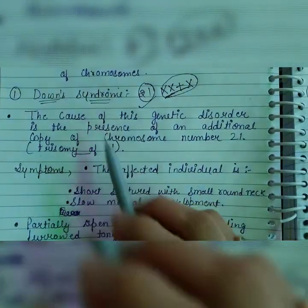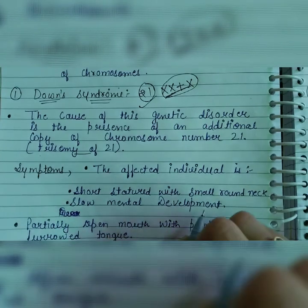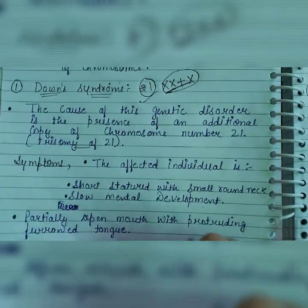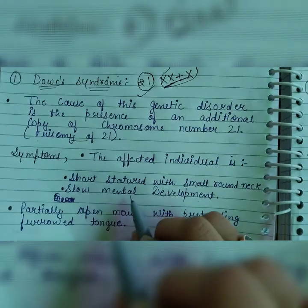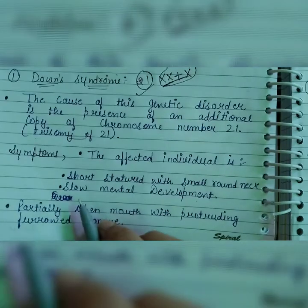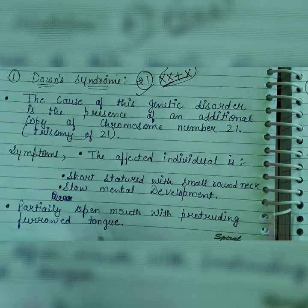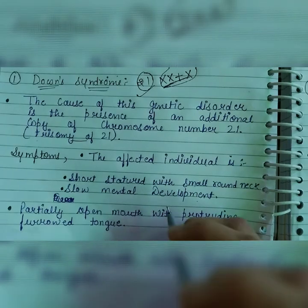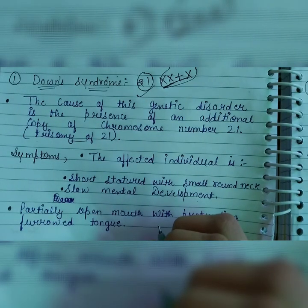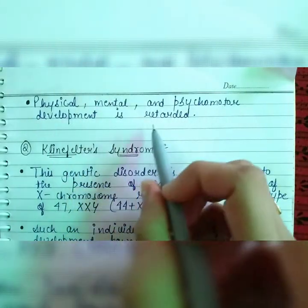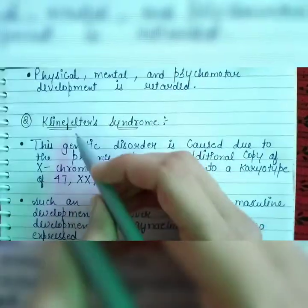The affected individual with Down Syndrome is short statured with a small round neck and slow mental development. There is a partially open mouth with a protruding furrowed tongue. The physical, mental, and psychomotor development is retarded in the person who is suffering from Down Syndrome.